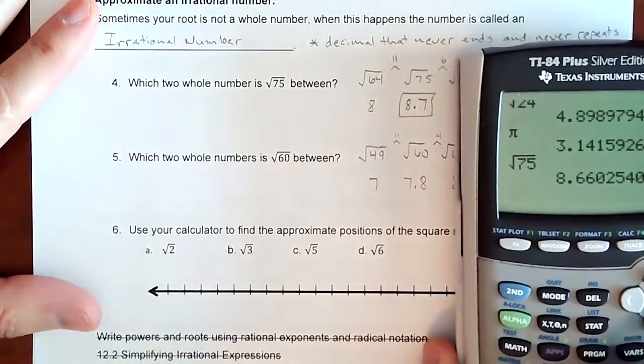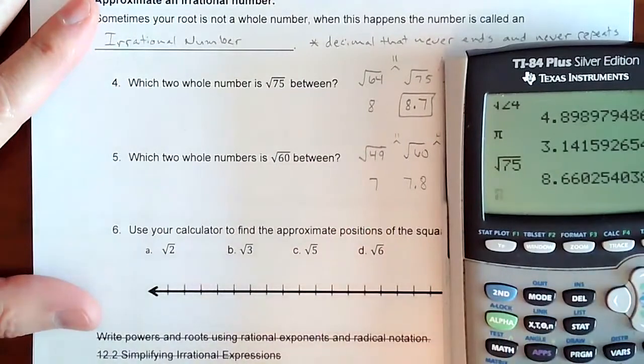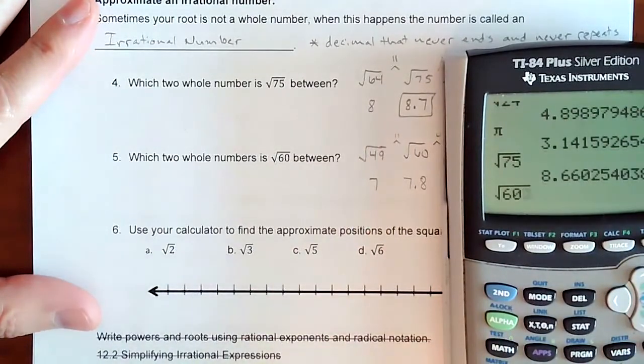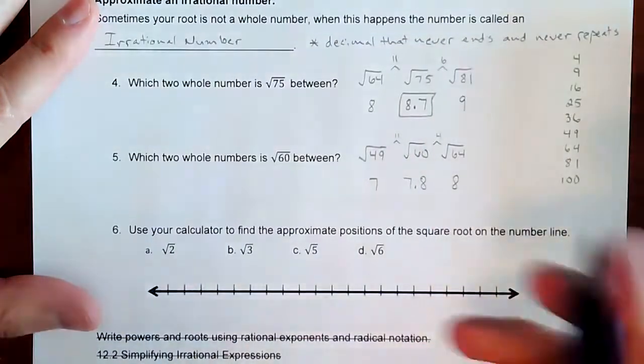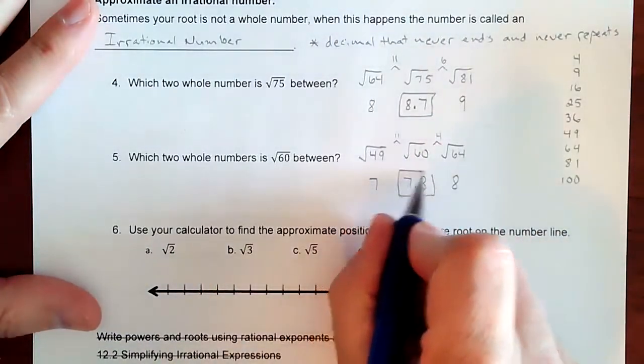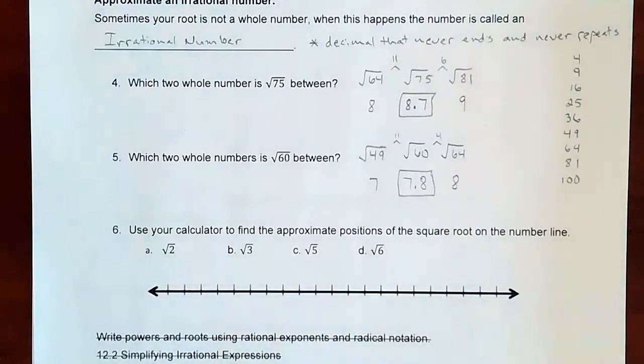So let's see how close we are. Square root of 60 is 7.7. Not too bad. And that's the idea is you're not going to be perfect on it, but if you're off by a decimal at most two, that's a pretty good estimate.